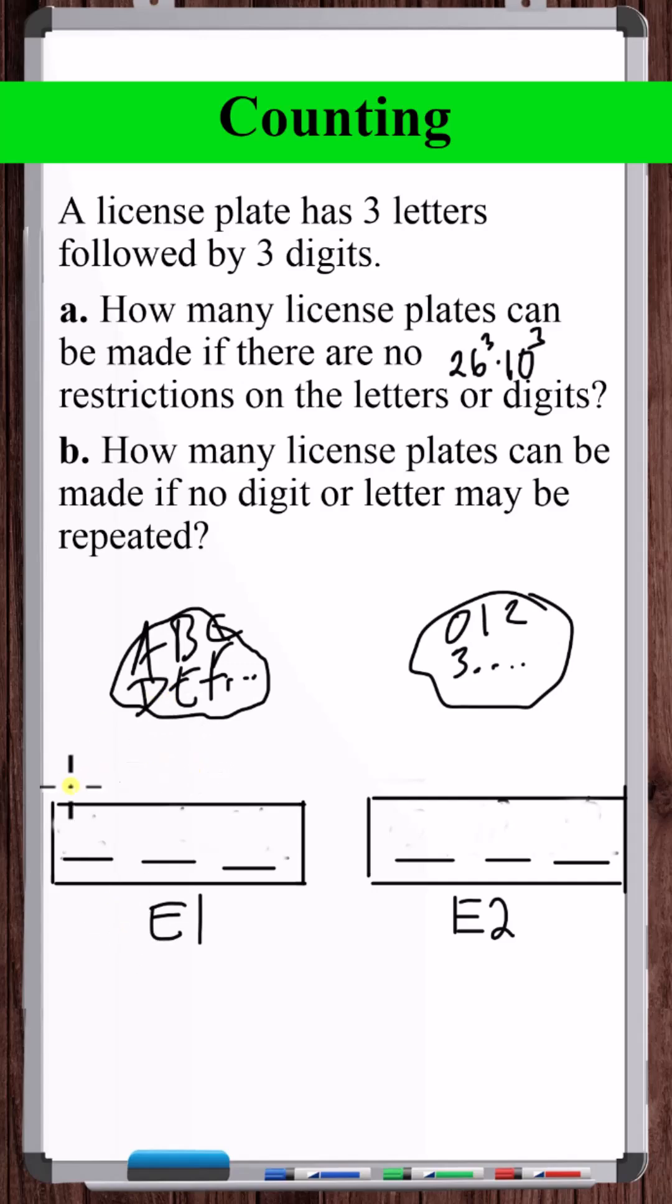The total number of outcomes for event one: we're choosing from a group of 26, so it's 26 P 3, which is 26 times 25 times 24. For event two, it's 10 P 3: 10 times 9 times 8.